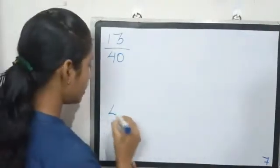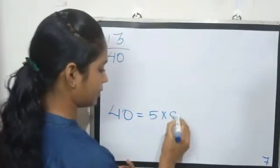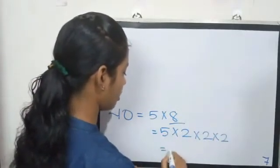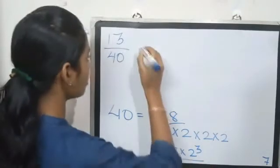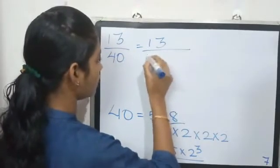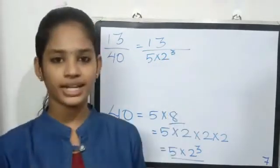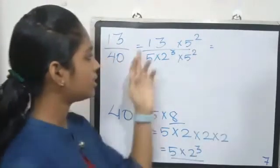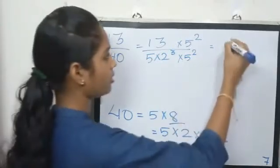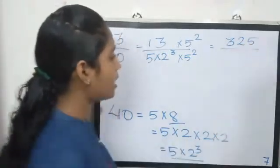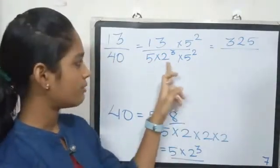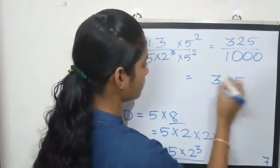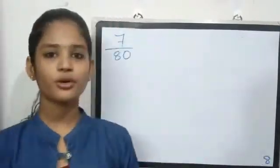Third question: 13 by something. 5 into 2 cubed in the denominator. 5 squared multiplied. 13 into 5 squared is 13 into 25, which is 325, divided by denominator 5 squared 25 into 5 is 125, into 8 is 1000. Decimal: 0.325.